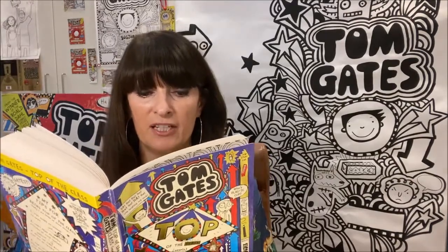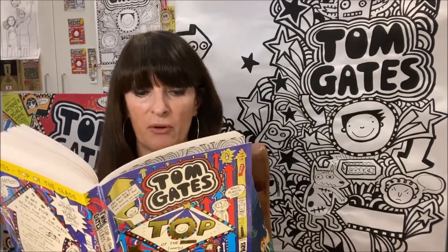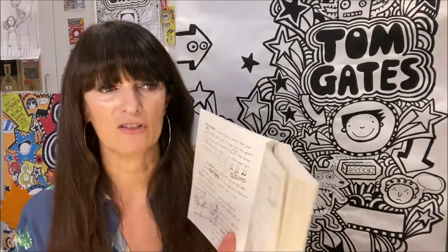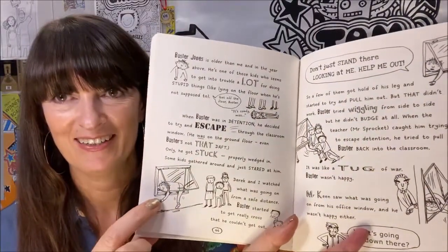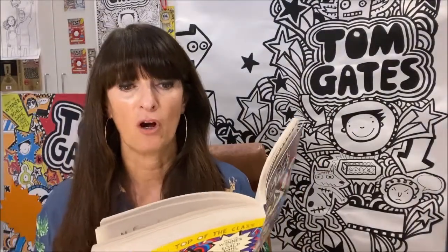Some kids gathered around and just stared at him. Derek and I watched what was going on from a safe distance. Buster started to get really cross that he couldn't get out. 'Don't just stand there looking at me — help me out, let me go!' He's stuck. So a few of them got hold of his leg and started to try and pull him out, but that didn't work. Buster tried wiggling from side to side but he didn't budge at all.